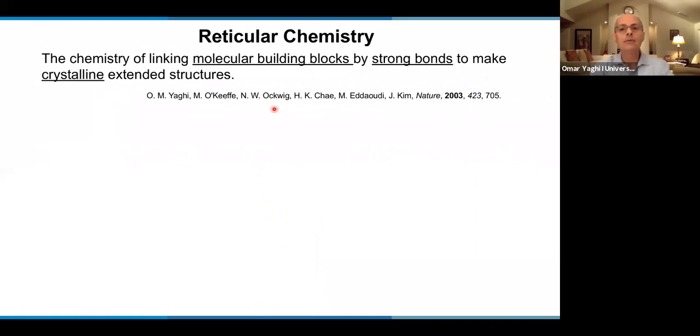So, reticular chemistry, just in case some of you are in this conference for the first time, let me give a definition. We define it as the chemistry of linking molecular building units by strong bonds to make crystalline extended structures. And this definition has three very important components that happen to be the pillars of reticular chemistry. The first is that we're using molecular building blocks.